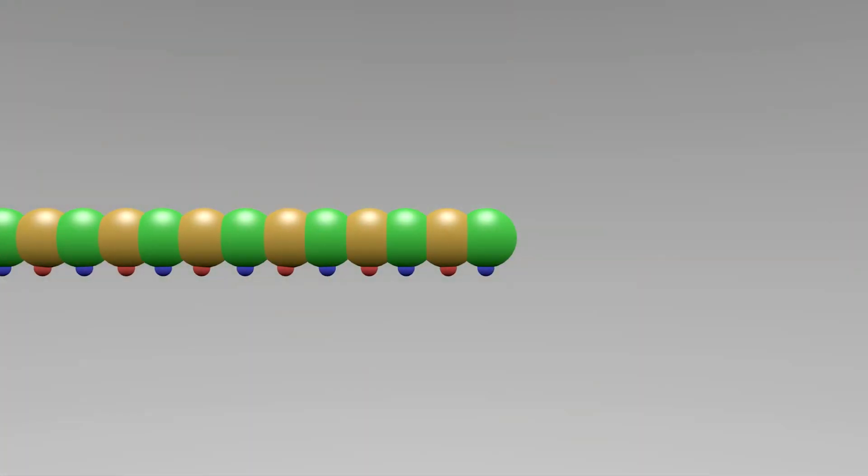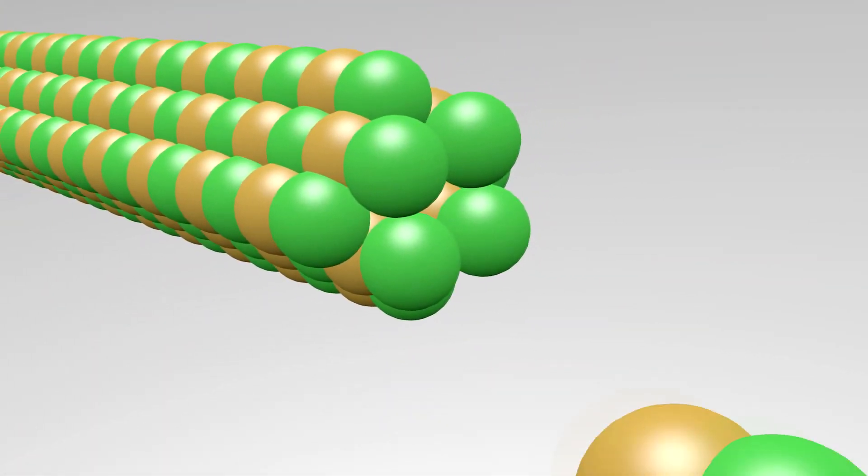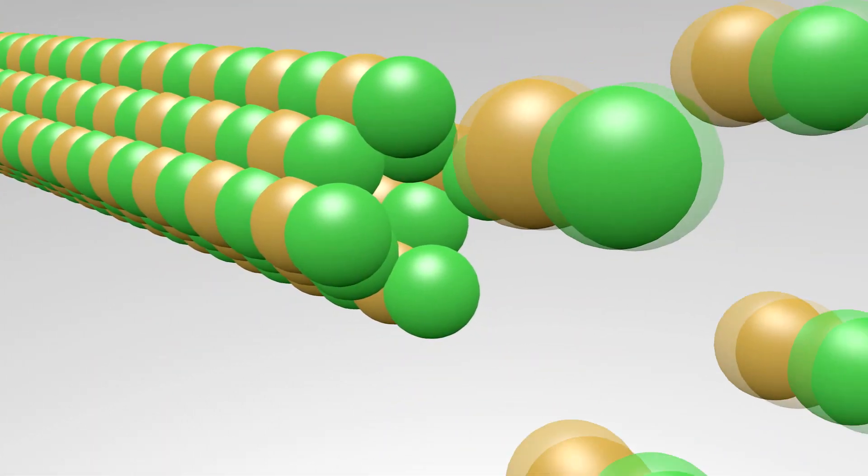What is the GTP cap? The GTP cap is wherever a new tubulin dimer comes in, it will attach to the positive end. Rescue is when GTP will hydrolyze to GDP, which causes the microtubule to grow.